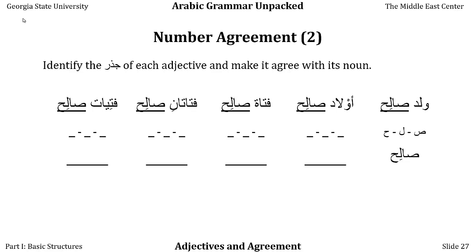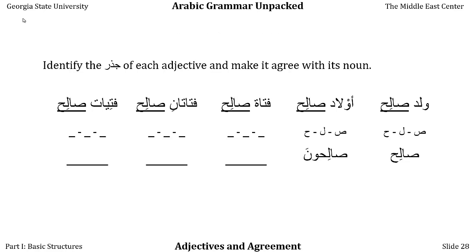In the second example, we have awlad — the plural of walad, meaning boys, sons, or often children. We're going to make salih agree. This is human plural, so it counts as truly plural rather than feminine singular. The root is sad-lam-ha. We're going to add the jama' mudhakkar salim, or sound masculine plural — 'sound' meaning regular, safe and sound — using the -un ending. So awlad salihun, good boys or virtuous boys.